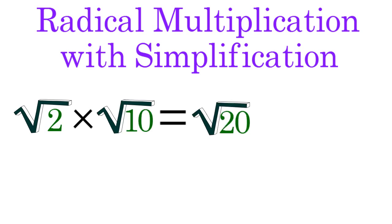For example, when you multiply radical 2 by radical 10, the result is radical 20. This value can be simplified to 2 radical 5.